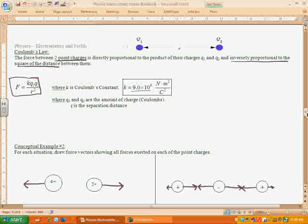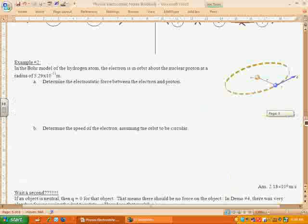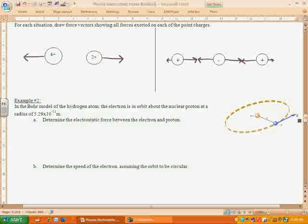So hopefully that was kind of a good introduction to Coulomb's Law for you. Let's go ahead and look now at example number two, a mathematical one. In the Bohr model of the hydrogen atom, the electron is in orbit around the nuclear proton at a radius of 5.29 times 10 to the negative 11 meters. Determine the electrostatic force between the electron and the proton. Well, we know that the force is equal to KQ1Q2 over R squared.